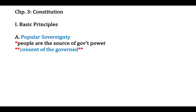One of the basic principles of our Constitution is the idea of popular sovereignty. That's something we've discussed before in class. That's simply the idea that people give the government power to govern us — the idea of consent of the governed, that we as people give the government permission to govern us.